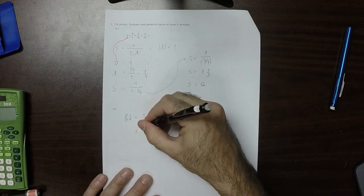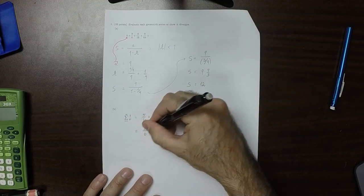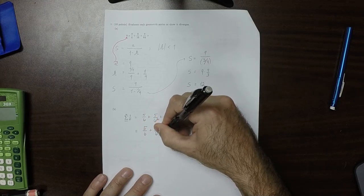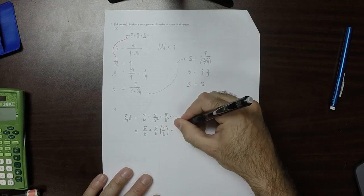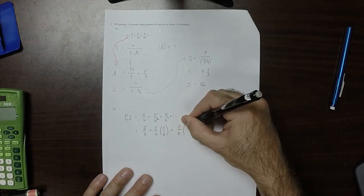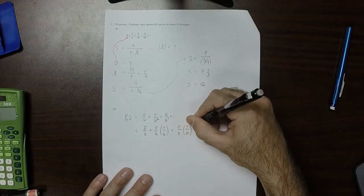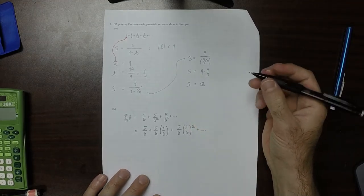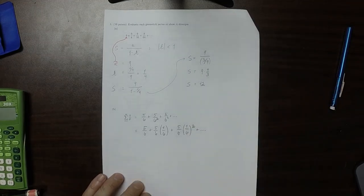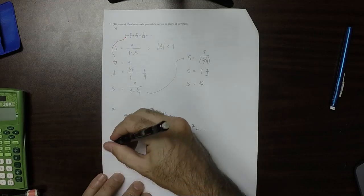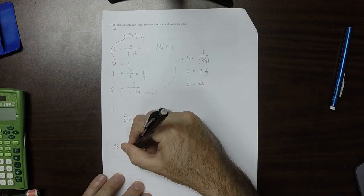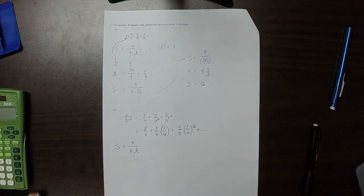So this would be 5 over 6 plus 5 over 6 times 1 over 6 plus 5 over 6 times 1 over 6 squared plus dot dot dot. So, again, the formula is the same as before. S is A over 1 minus R. We just need to figure out what A and R are.